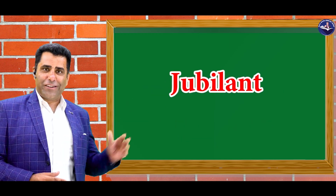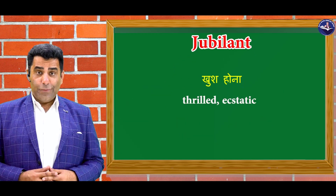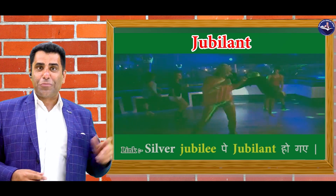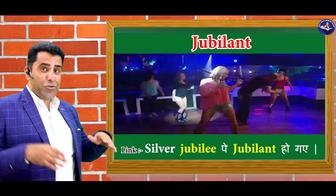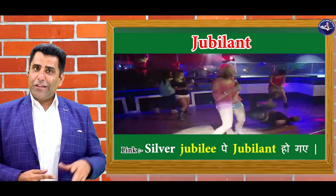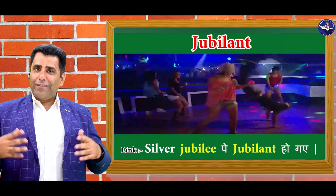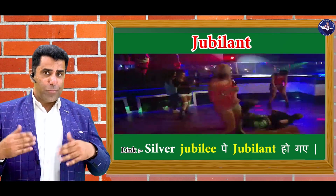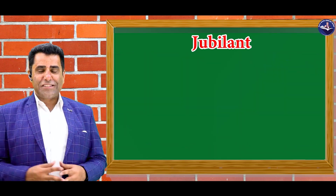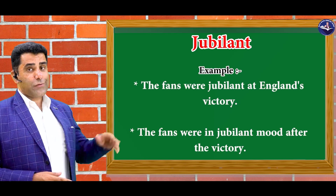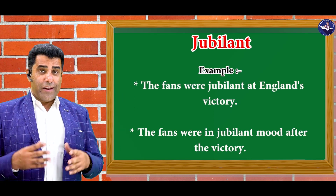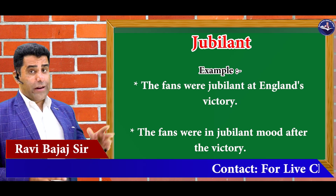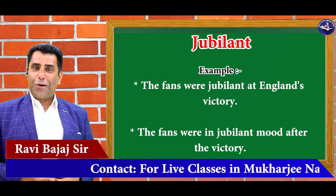Next word is jubilant — woh zyada khush hona. Thrilled, ecstatic. And the link word is silver jubilee — silver jubilee pe jubilant ho gai. Silver jubilee di kisi ki, us pe bahot khush ho gai, jubilant ho gai. Silver jubilee pe jubilant. So you can see the sentences here guys. The fans were jubilant at England's victory. Jab England ne World Cup jita to uske jo fans the woh bahot khush the. And jubilant mood bhi hota hai.